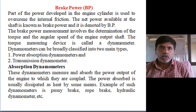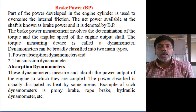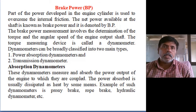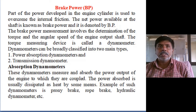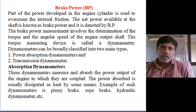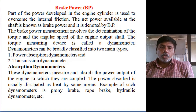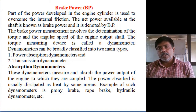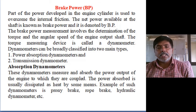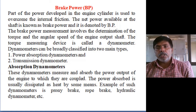An absorption dynamometer absorbs whatever power it is measuring. A transmission dynamometer just transmits the power. Transmission dynamometers are used in manufacturing industry where continuous measurement of engine output is required. In performance analysis and general testing labs, absorption dynamometers are used, where we measure at a particular resistance, speed, and load — not continuous operation.